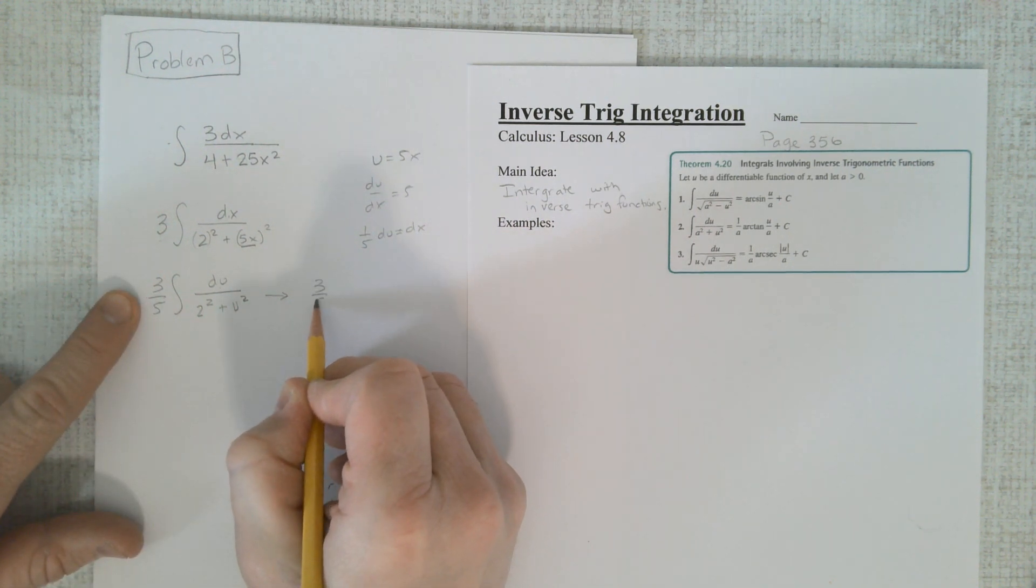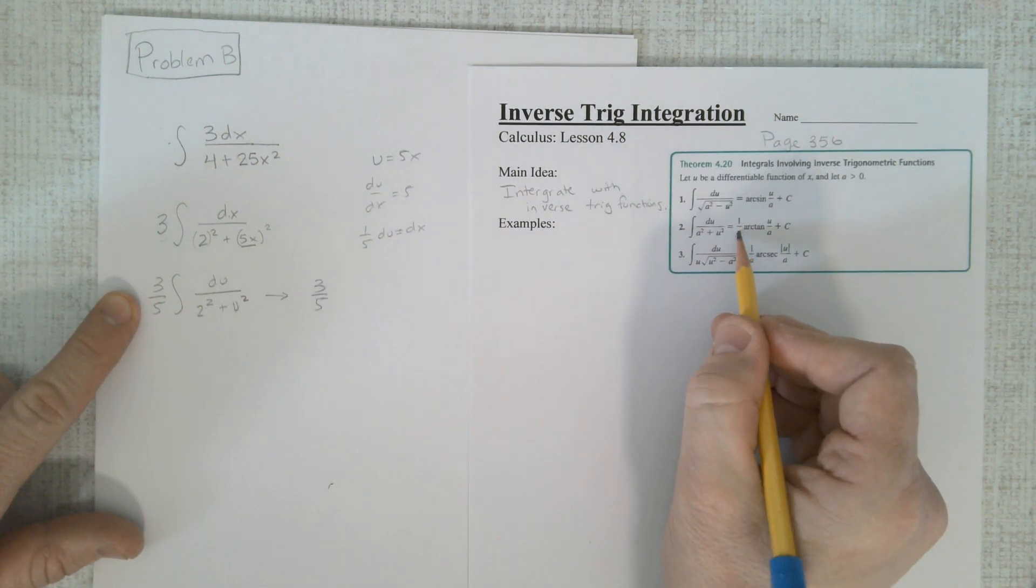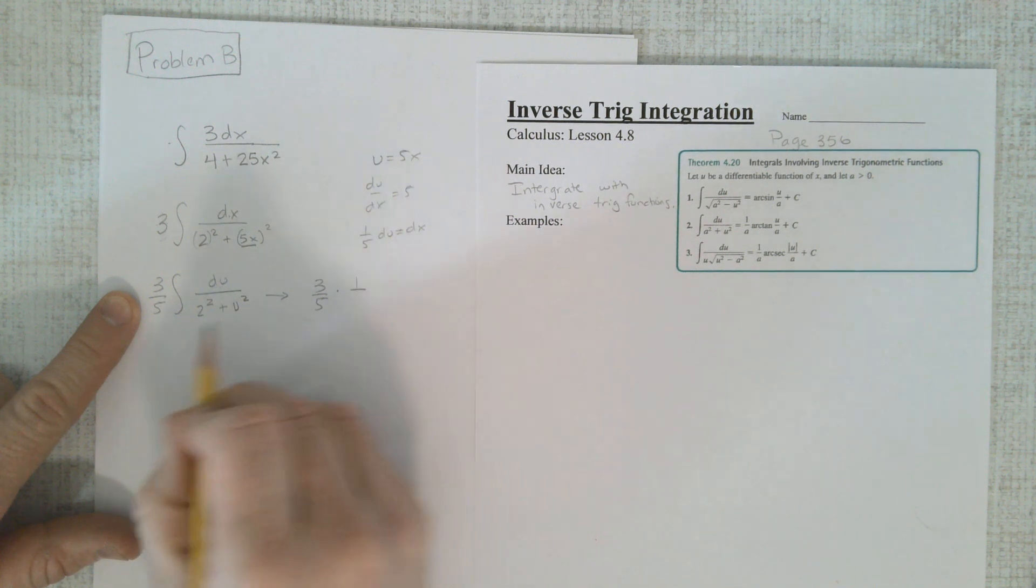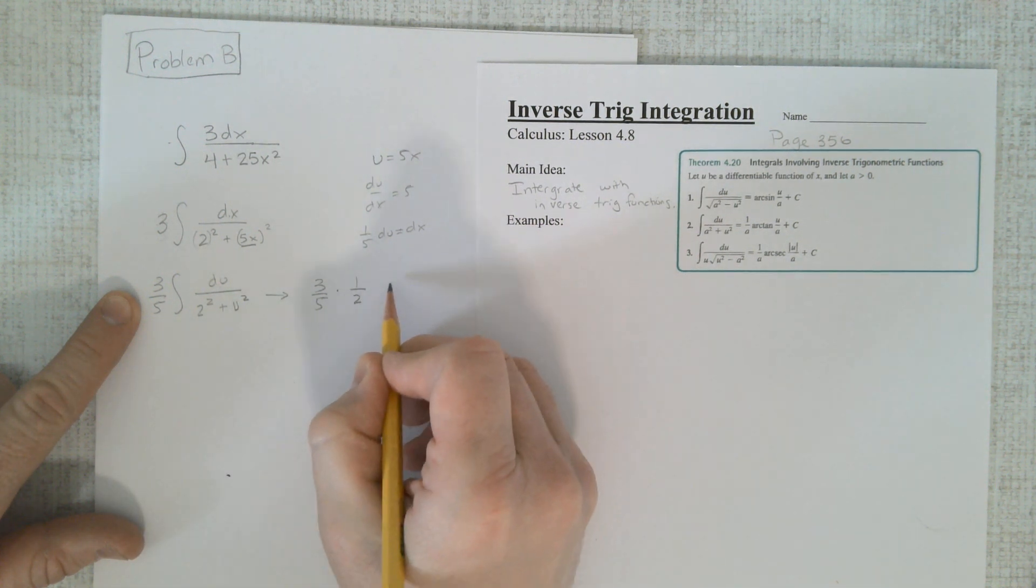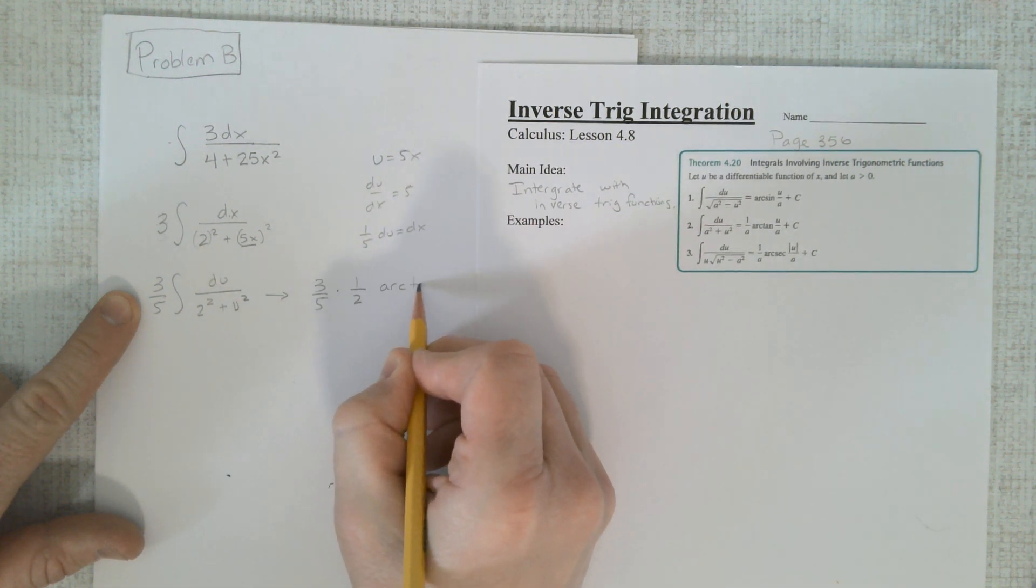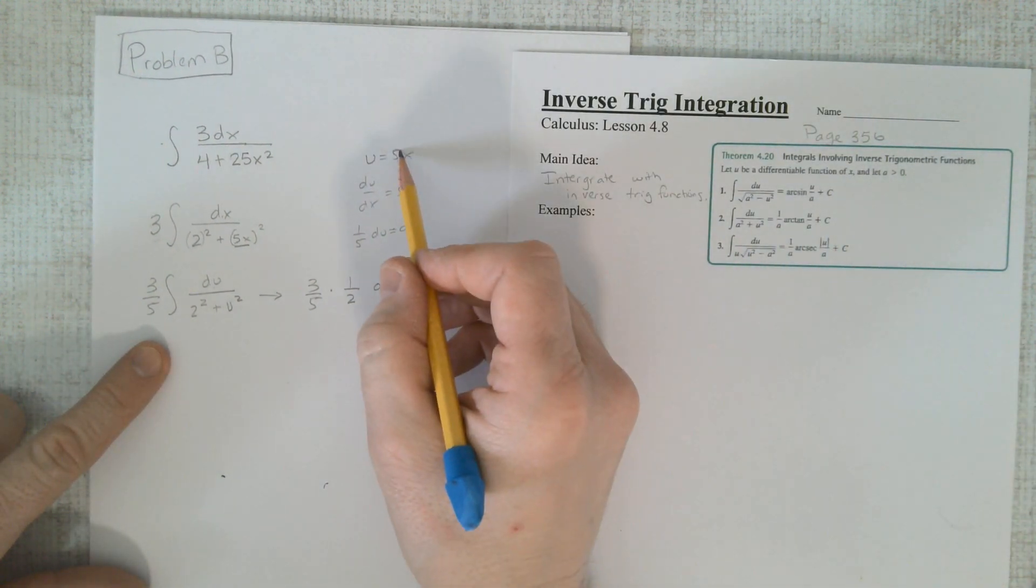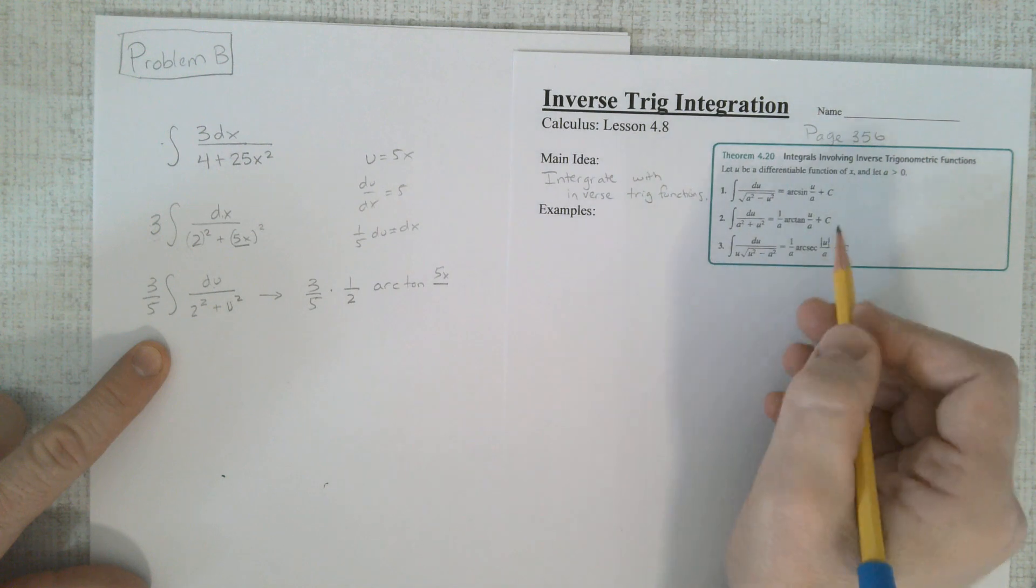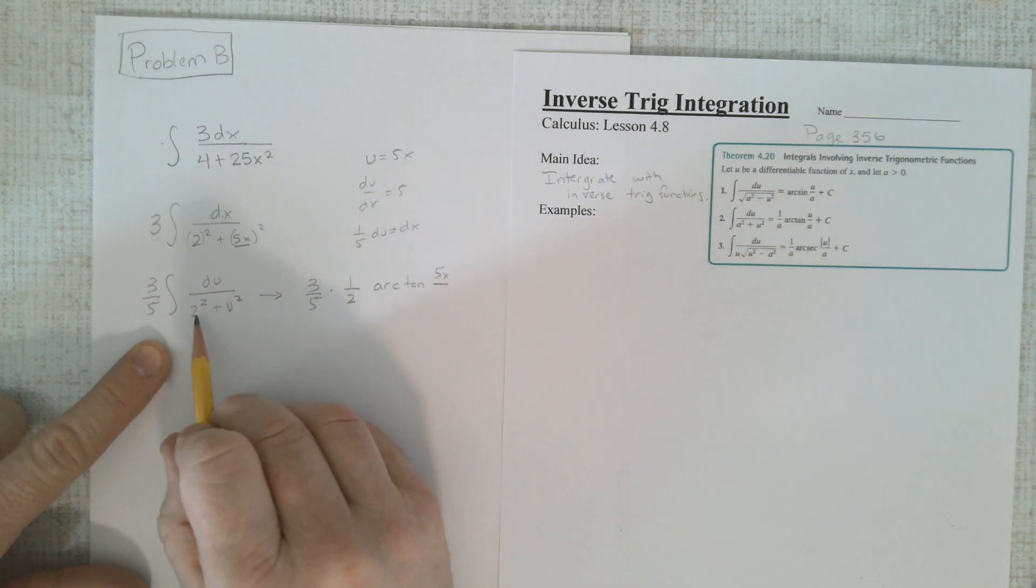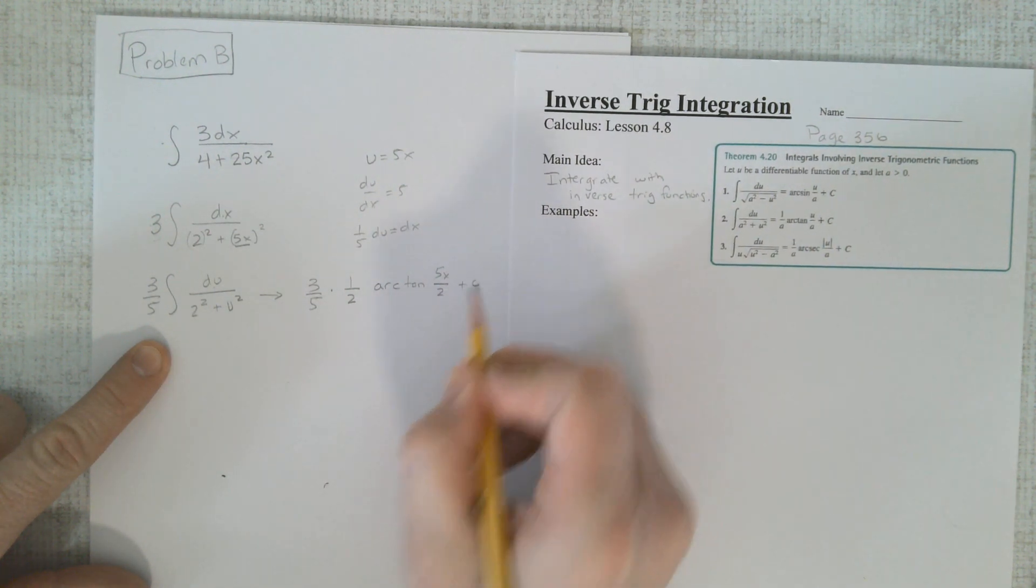And now I have it exactly looking like this. There's a du by itself. An a squared. An u squared. And then I can go right to my answer. Don't forget the constant. 3/5ths. 1 over the a value. 1 over the a value, 2. Arc tangent. And u, which is 5x. And a, which is 2.